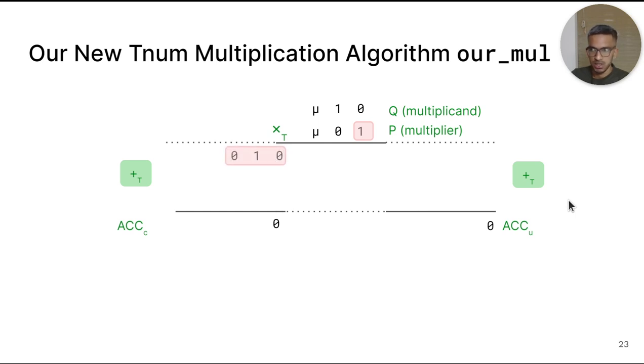ACK_U accumulates only the uncertain trits of Q. All other trits are set to 0. When the LSB of the multiplier is 0, we don't need to accumulate anything and the accumulators remain unchanged.